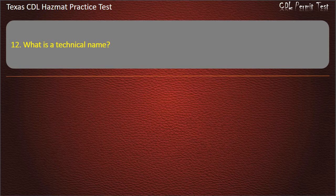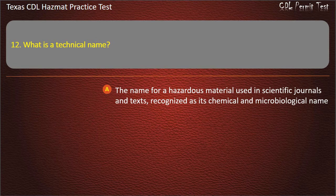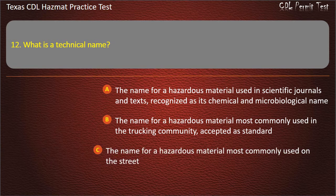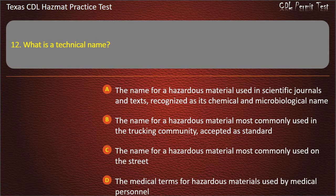Question 12: What is a technical name? The name for a hazardous material used in scientific journals and texts, recognized as its chemical and microbiological name. Or the name for a hazardous material used in the trucking community, accepted as standard. Answer: The name for a hazardous material used in scientific journals and texts, recognized as its chemical and microbiological name.